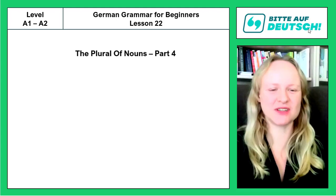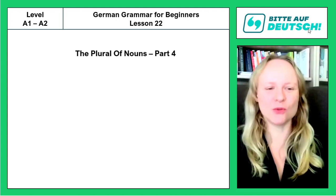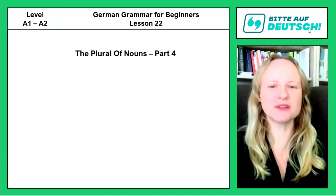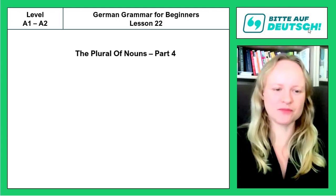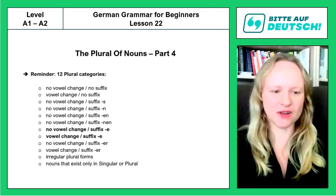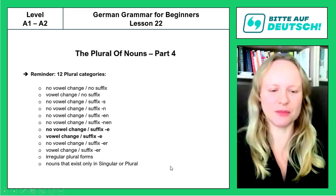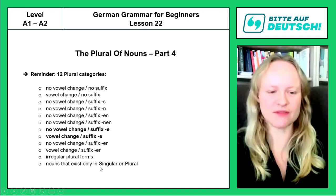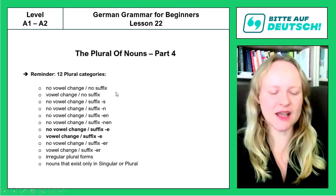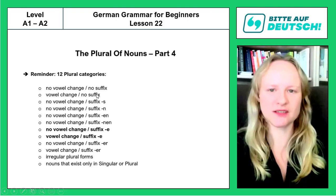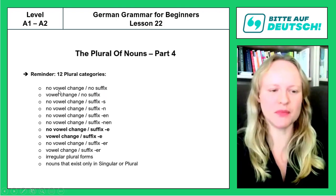Hey everyone! Welcome to lesson 22. We are still talking about the plurals of German nouns and I have split it up into several parts. We are today talking about part 4 and in our overview of noun categories, let me quickly remind you that we have already been dealing with nouns that exist only in singular or plural, and in the last lesson I showed you those two categories together — nouns that do not take a suffix in their plural form but may or may not take a vowel change.